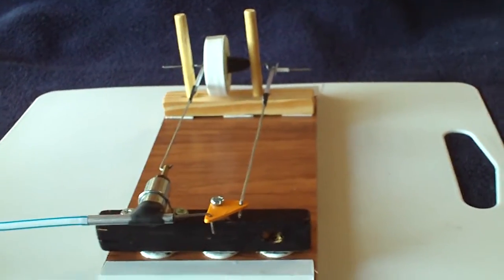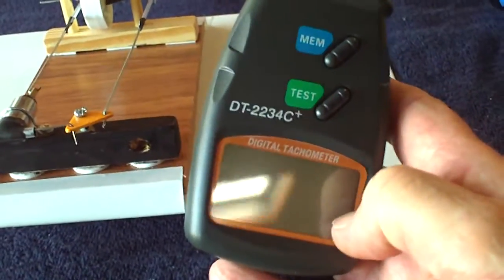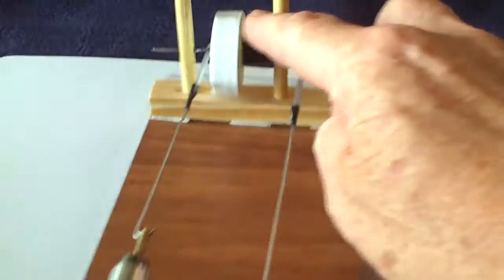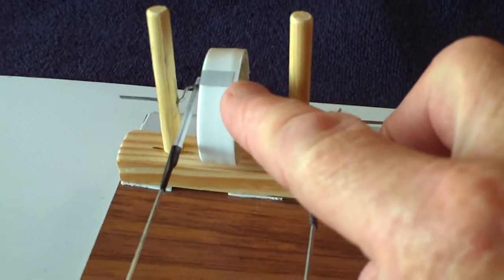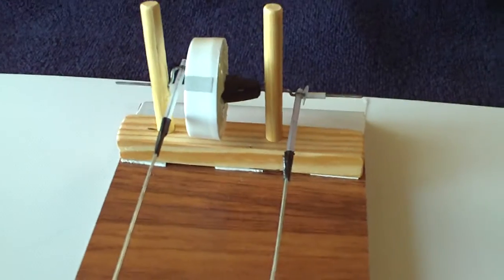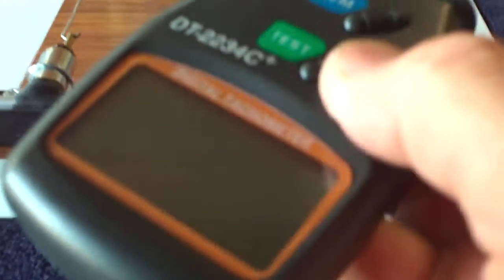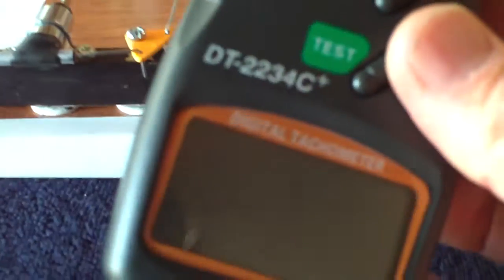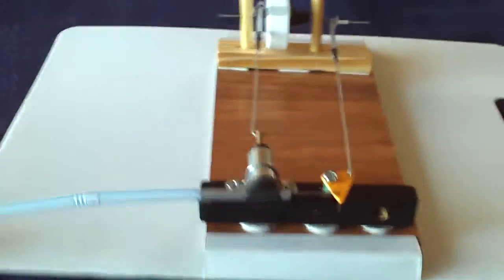It runs at about 1100 RPM and I've got a little RPM tester here to show that. There's a little mark on the flywheel right there with reflective tape that this laser RPM gauge picks up. Let me turn this on and show you how it runs.